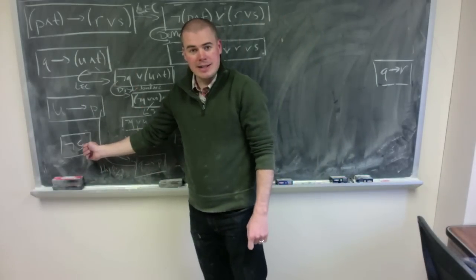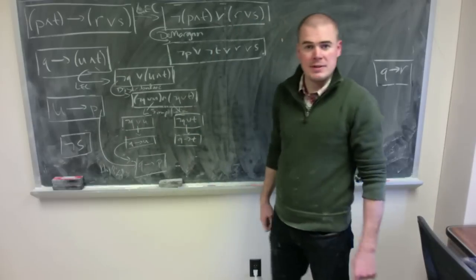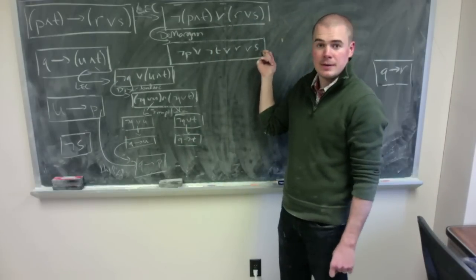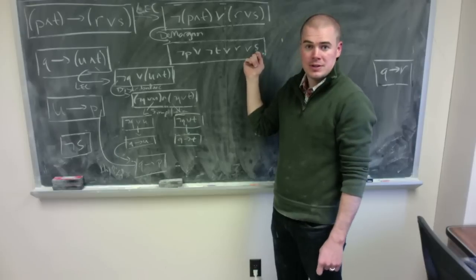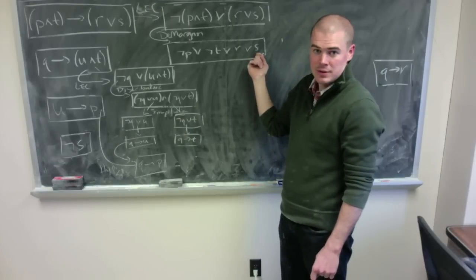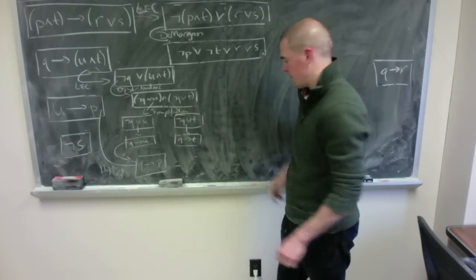I haven't used this premise yet, this NOT S yet and the only other time I see S being used and my most recent thing is here. I have this big OR statement and I know that S is false. This S doesn't help my OR statement. So I can use disjunctive syllogism to combine them. I'll use a different color to get from over there.